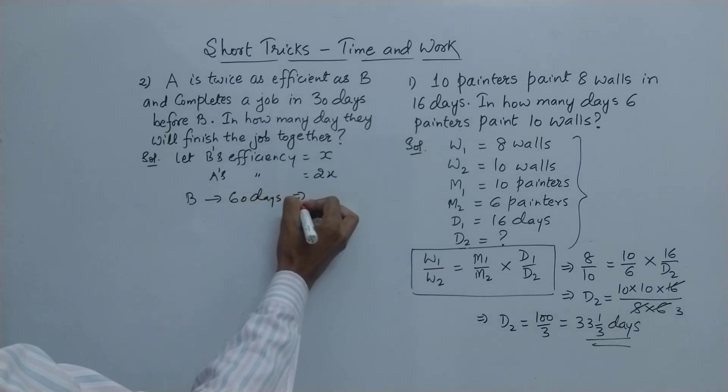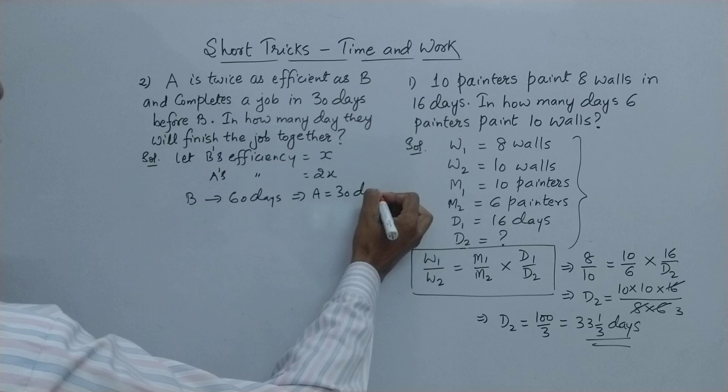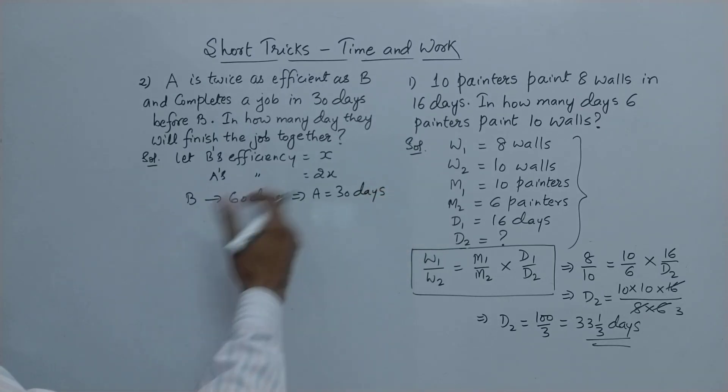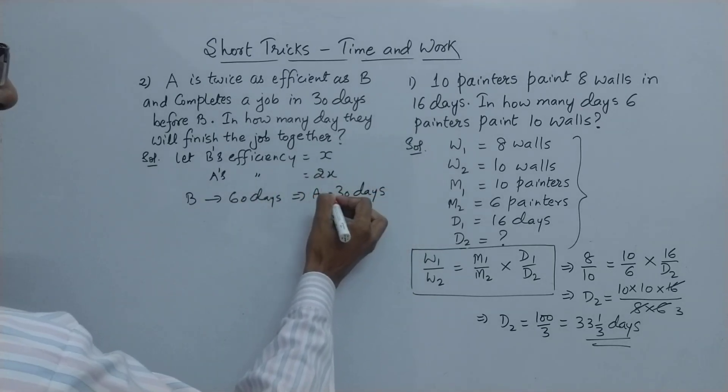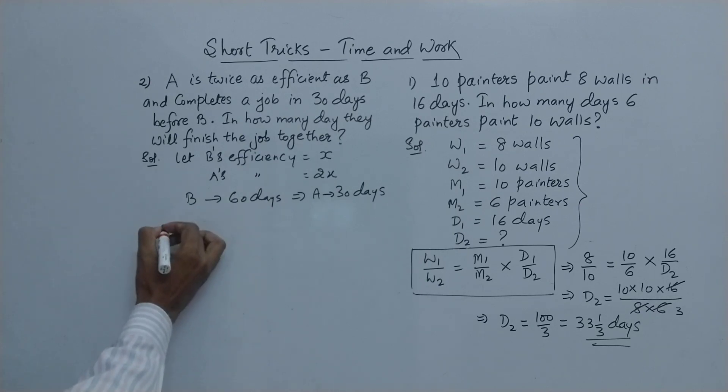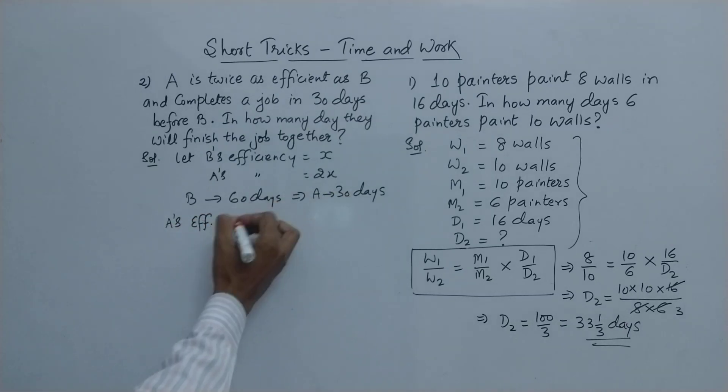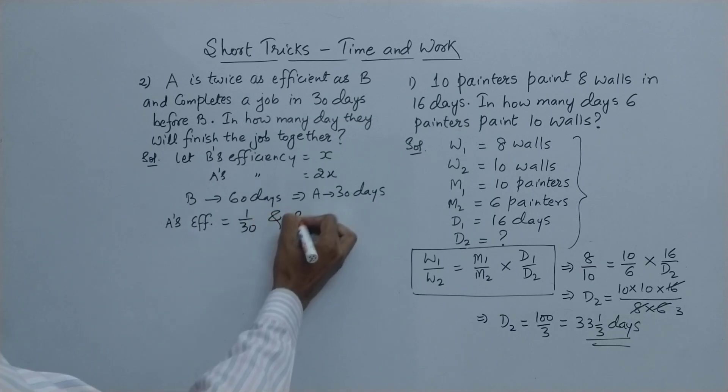So if B is taking 60 days then A is taking only 30 days, so 30 days before B. So 60 and 30, this is the simplest possible which I can assume. So in case of A, his efficiency will be, now he is doing it in 30 days, that means 1 by 30, and B's efficiency, obviously he is doing it in 60 days, so 1 upon 60.